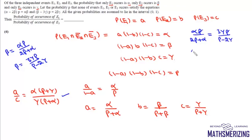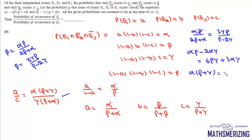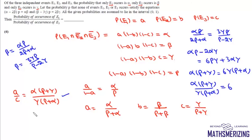The p cancels from both sides, giving alpha p minus 2 alpha gamma equals 6p gamma plus 3 alpha gamma. Adding 3 alpha gamma to both sides and rearranging, we get alpha(p plus gamma) equals 6 gamma(p plus alpha). Therefore, alpha(p plus gamma) upon gamma(p plus alpha) equals 6. So the probability of e1 upon the probability of e3 is 6, and that is the answer.